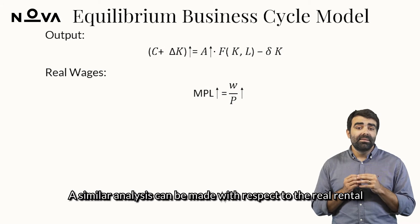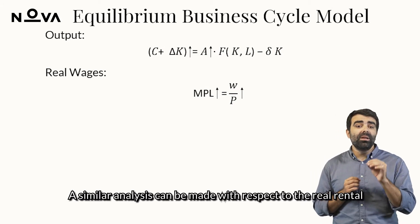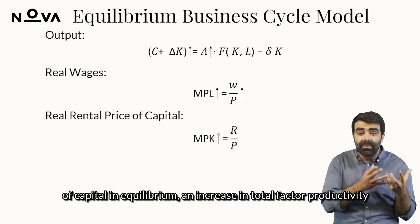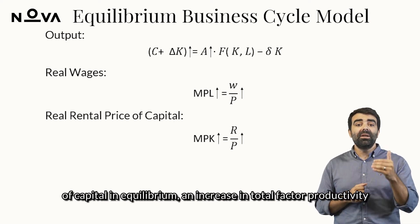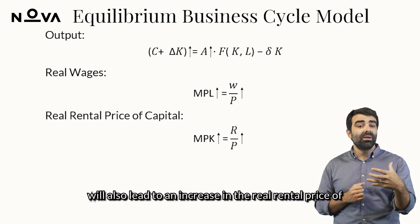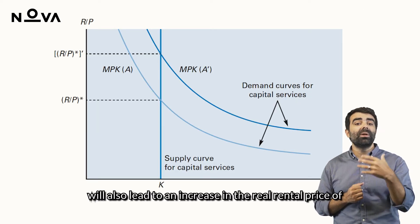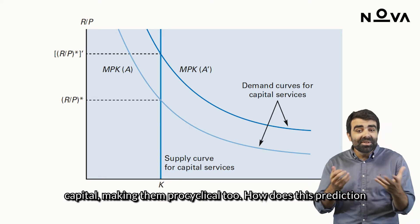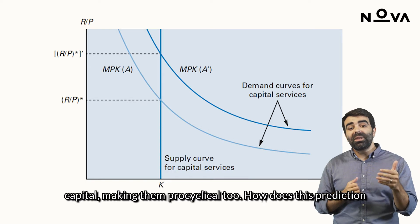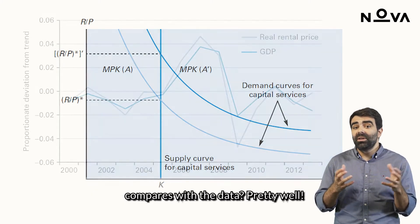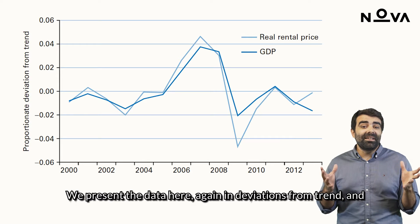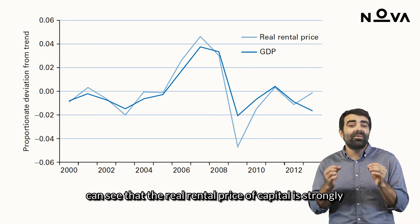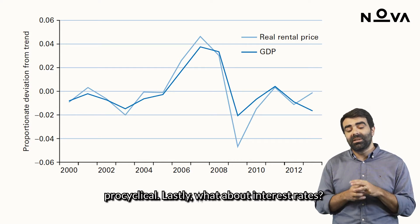A similar analysis can be made with respect to the real rental price of capital. Since this is equal to the marginal product of capital in equilibrium, an increase in total factor productivity will also lead to an increase in the real rental price of capital, making it pro-cyclical too. We present the data here, again in deviations from trend, and can see that the real rental price of capital is strongly pro-cyclical.